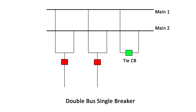A tie breaker connects both main buses and is normally closed, allowing for more flexibility in operation. A fault on one bus requires isolation of the bus, while the circuits are fed from the opposite bus.